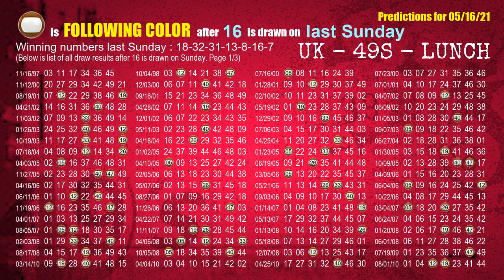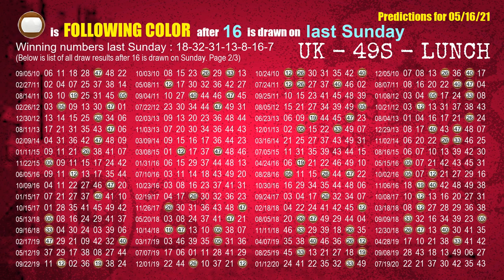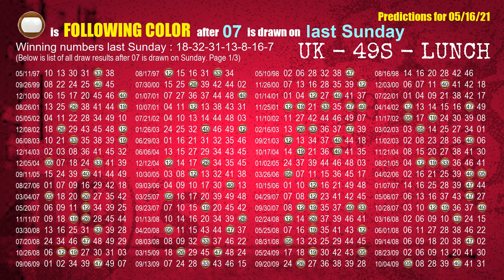The sixth winning number last Sunday is 16. The most frequently following color is brown when 16 is the winning number on last Sunday. The booster winning number last Sunday is 07. The most frequently following color is brown when 07 is the winning number on last Sunday.